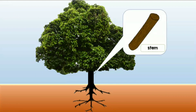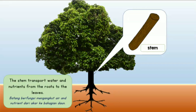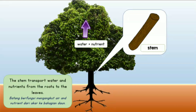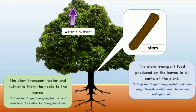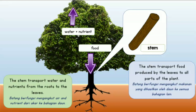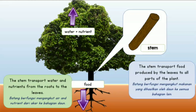Now look at the stem. The stem transports water and nutrients from the roots to the leaves. Batang berfungsi mengangkut air dan nutrient dari akar ke bahagian daun. The stem also transports food produced by the leaves to all parts of the plant. Batang berfungsi mengangkut makanan yang dihasilkan oleh daun ke semua bahagian lain.